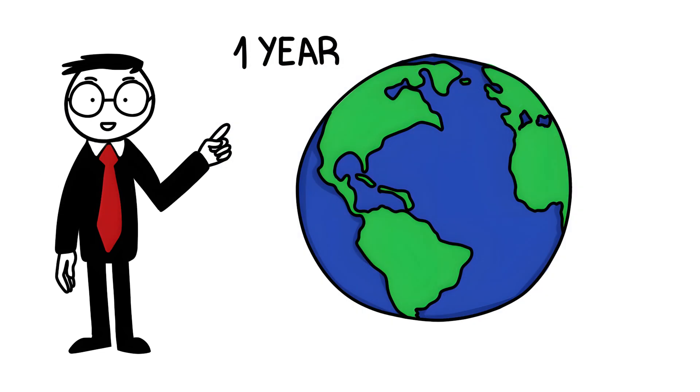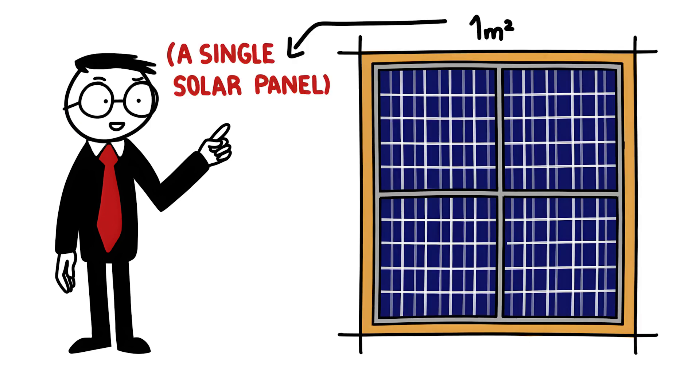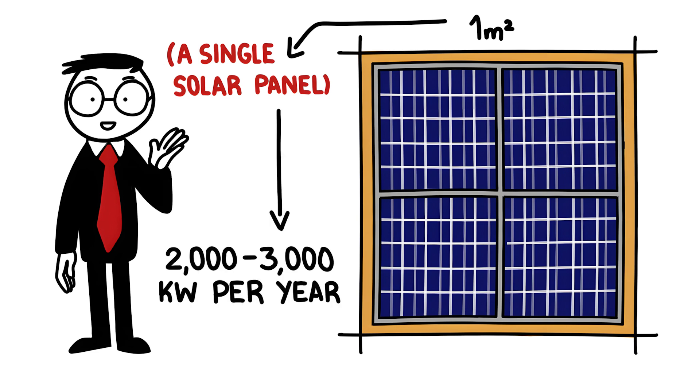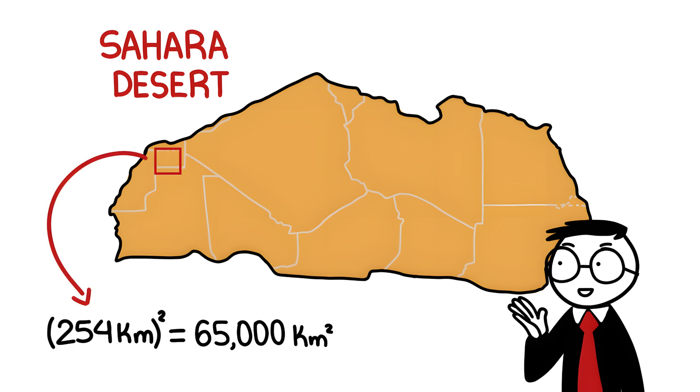In one year, humanity consumes around 27 terawatts of electrical energy. Assuming that one square meter of solar panels in the Sahara generates between 2,000 and 3,000 kilowatt hours of energy per year, an area of just 65,000 square kilometers would be enough to cover the world's energy needs. This corresponds to a square of only 254 kilometers.